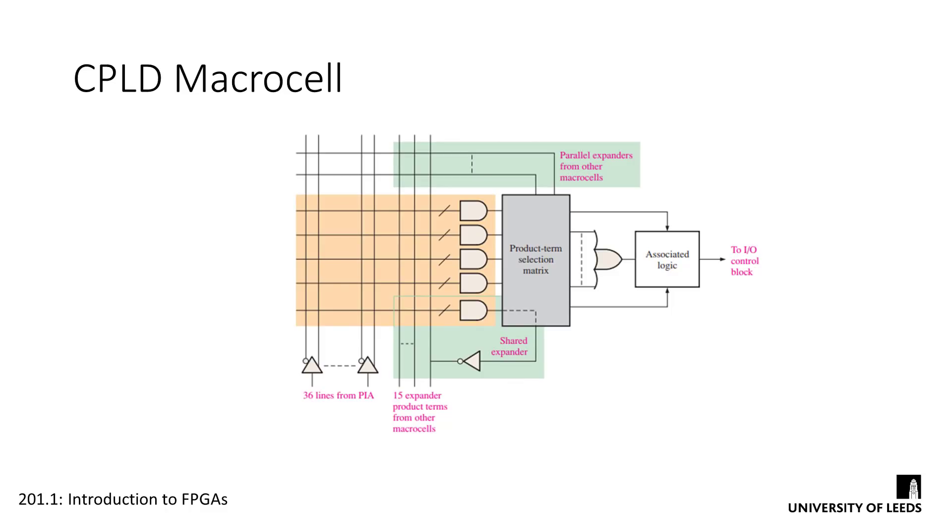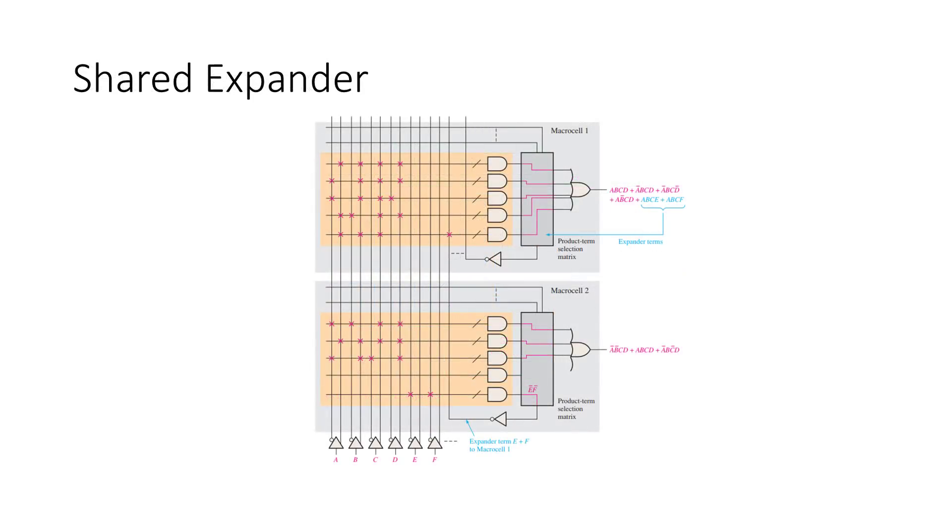CPLD macro cells differ somewhat from those on an SPLD. They contain five AND gates and include a product term selection matrix. This matrix routes signals from the AND gates to the OR gates as required, so if only three of the AND gates are used, the last two can be disconnected from the OR gate. In this configuration, each macro cell can produce up to five product terms for its output. If it needs more than five terms, it can use an expander term from another macro cell. Shared expanders feed one product term of the macro cell back into the AND array for use by other macro cells. This not only avoids replication of terms across cells, but also allows SOP expressions with more than the standard number of inputs to be generated.